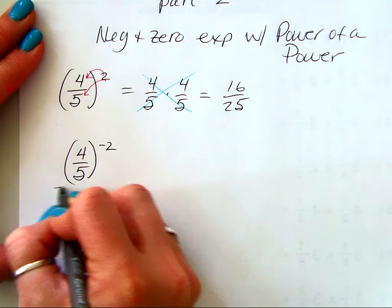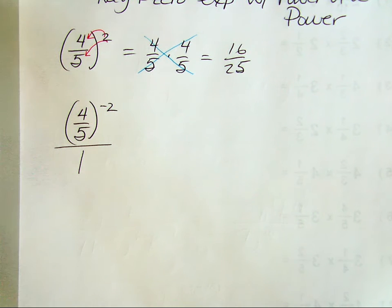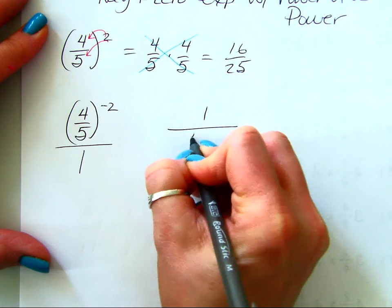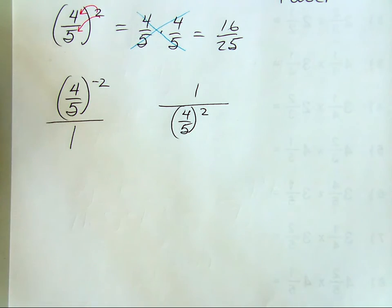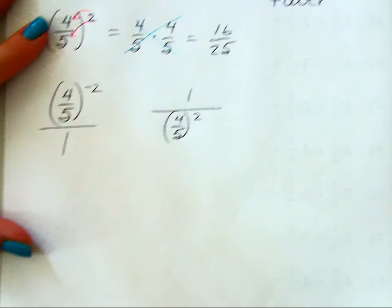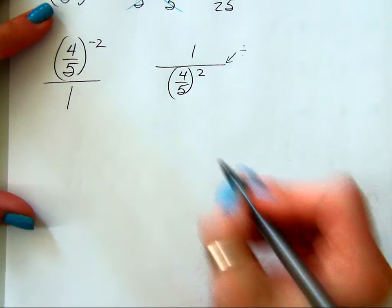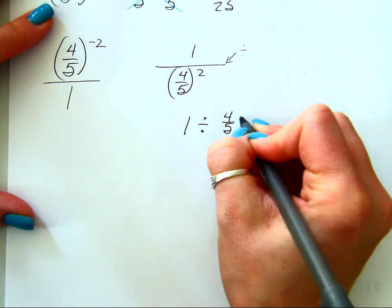Because the whole base is 4 fifths, I have to take that whole base and put it to the bottom just to make that 2 positive. So you're going to have a fraction in a fraction — really 1 over (4 fifths to the positive 2nd power). This line means divided by, so this is just 1 divided by 4 fifths squared.